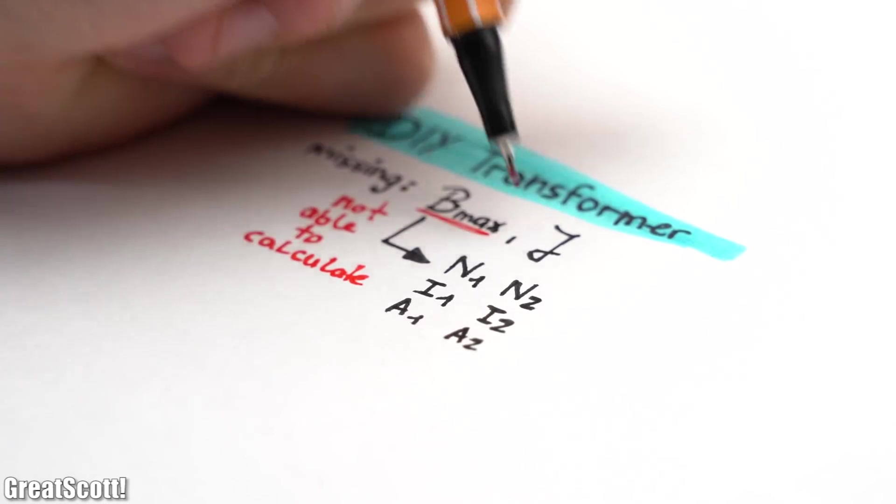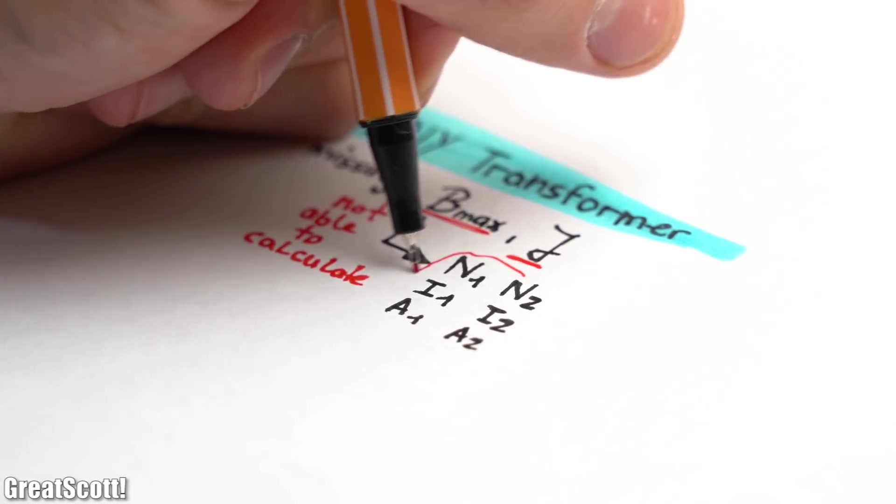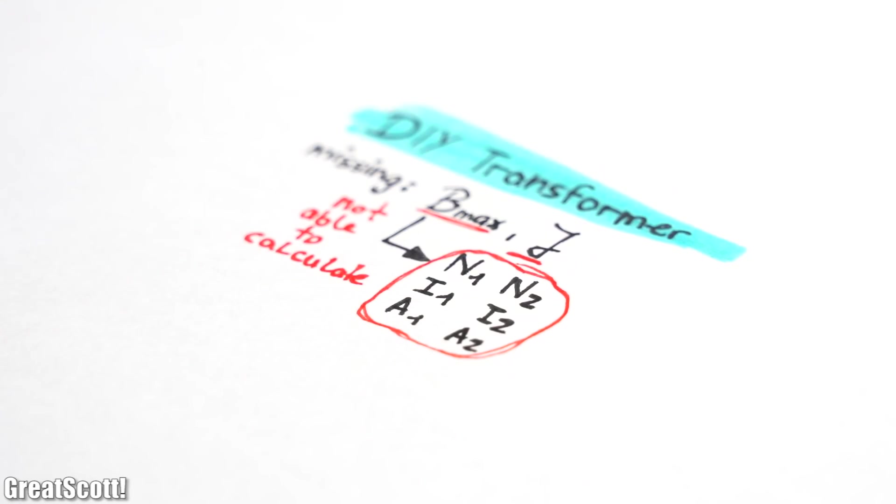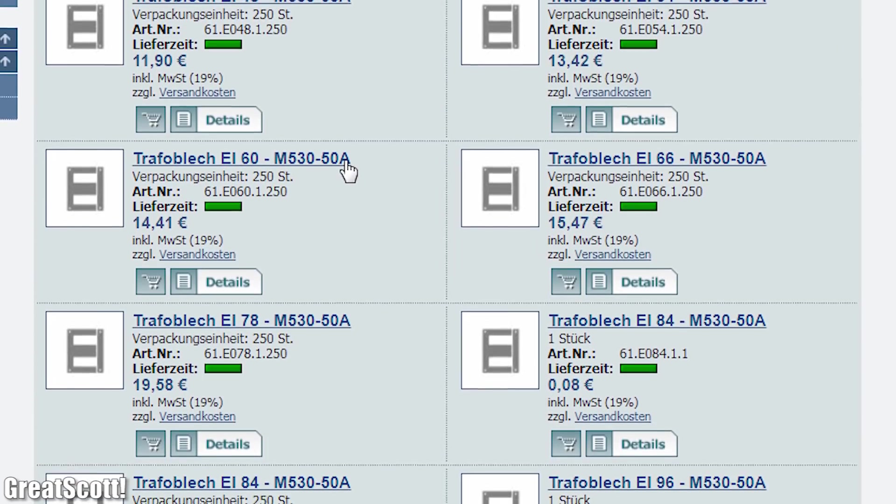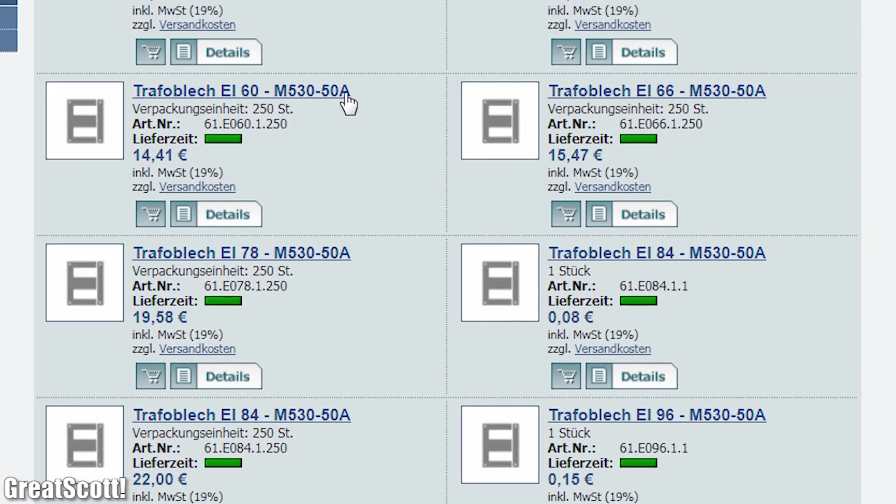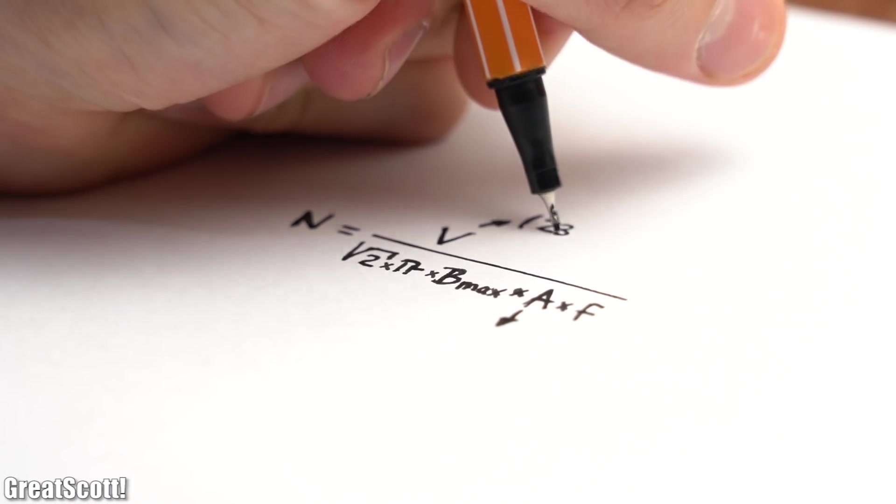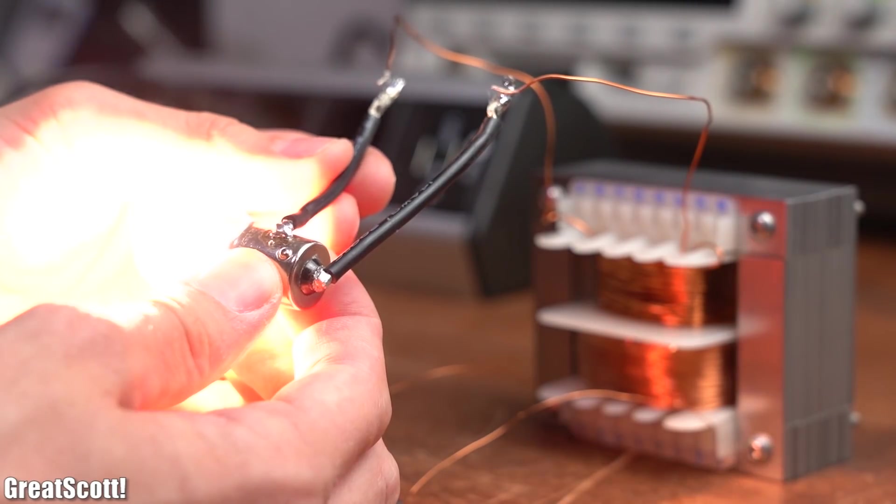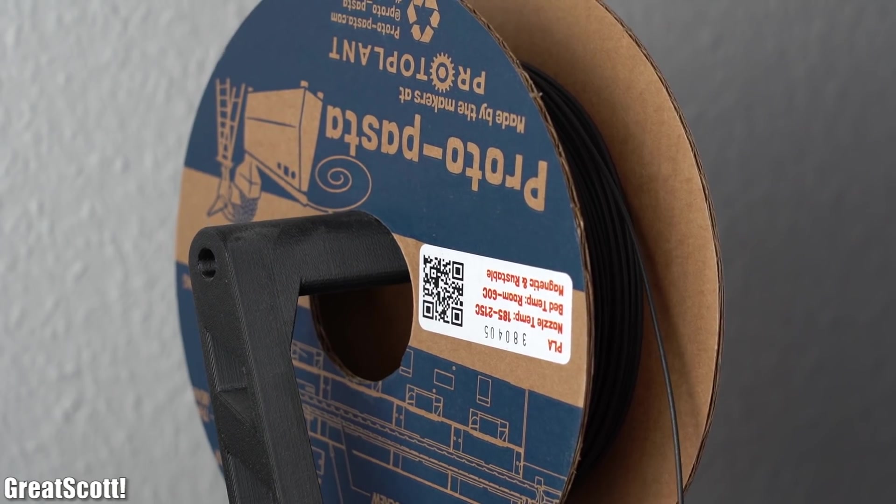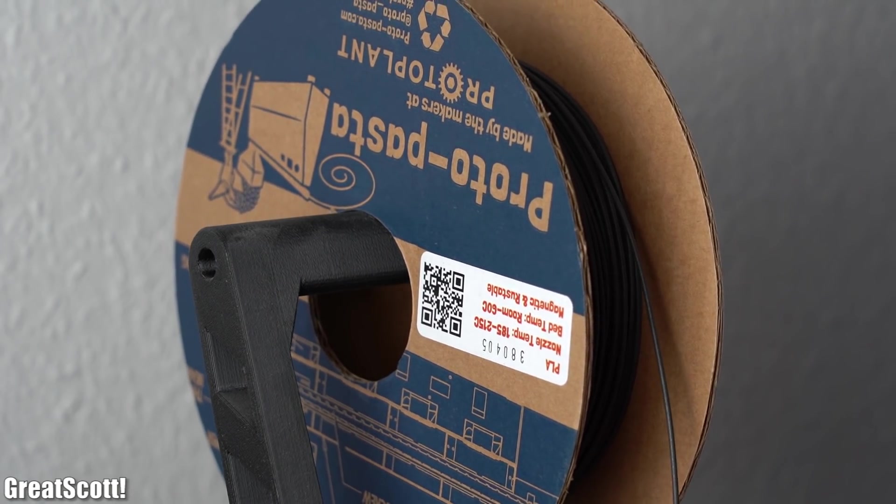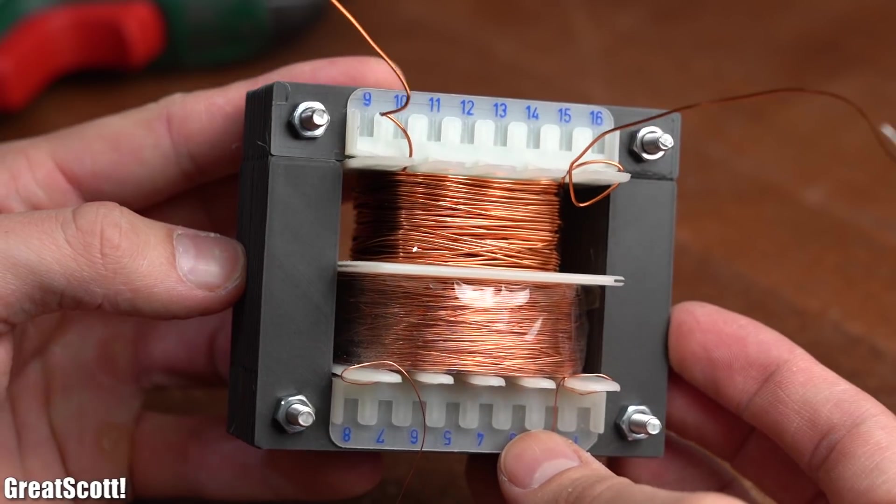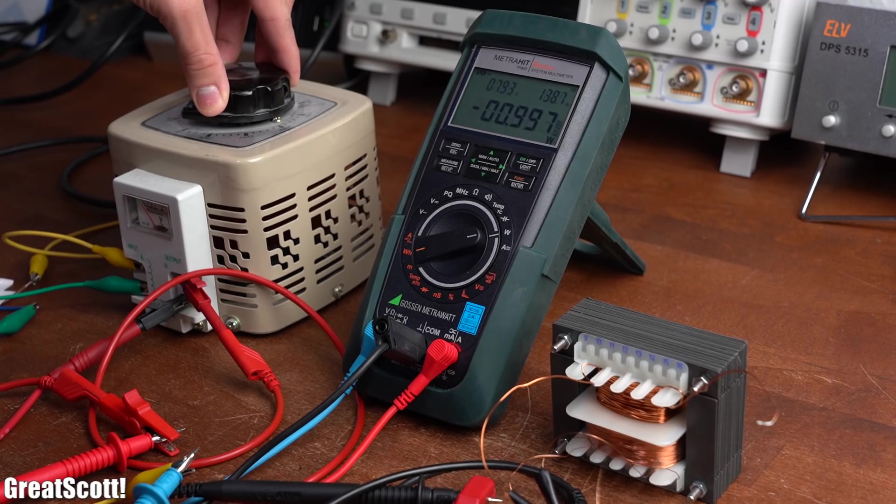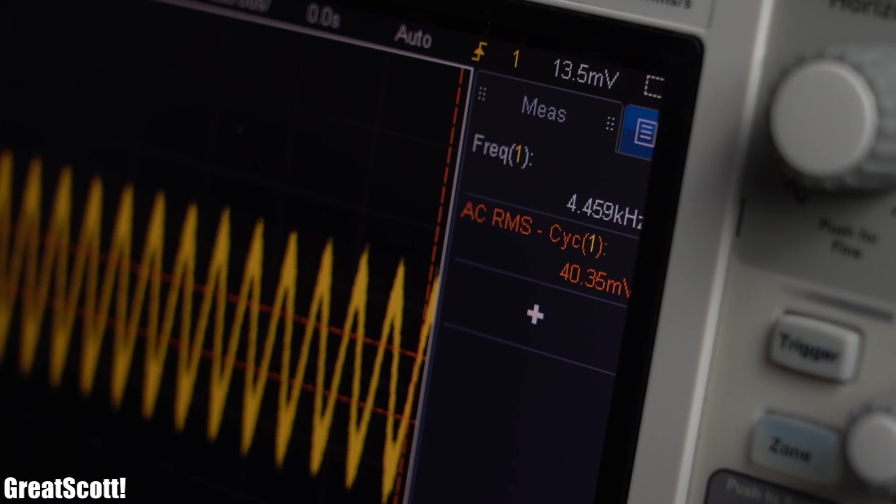My first DIY transformer build failed since I didn't have access to the magnetic and electric properties of the transformer core. Thankfully though, I found an online shop that sells standardized electrical steel sheets. So in this video I will not only show you how to calculate and build a mains transformer with them, but I will also be using ferromagnetic filaments to create a 3D printer transformer core which I will then test to determine whether it is a functioning alternative material. Let's get started!